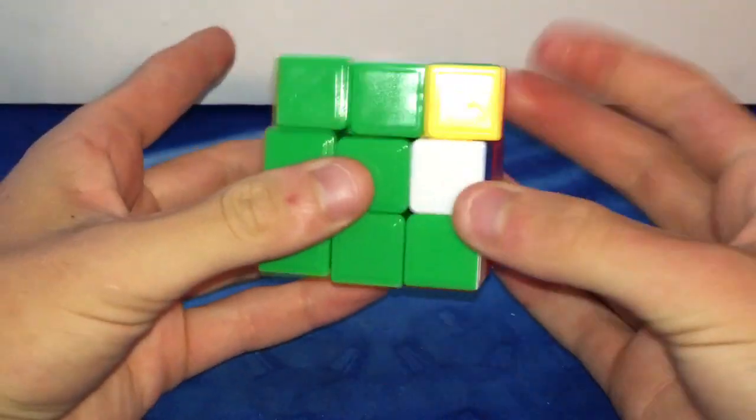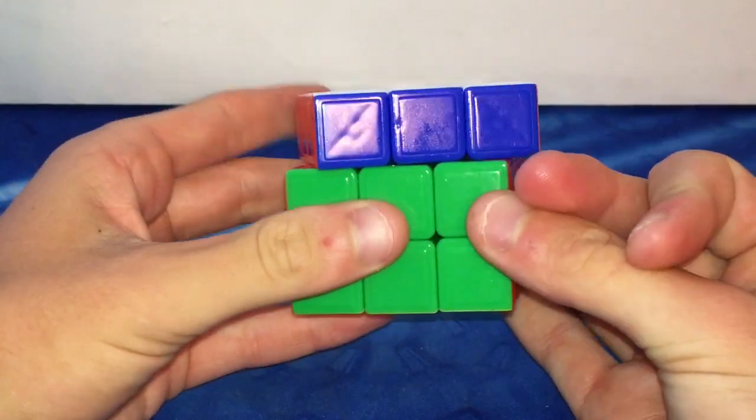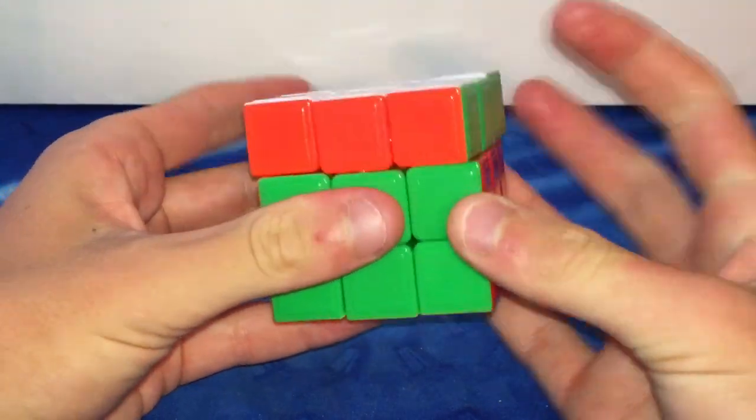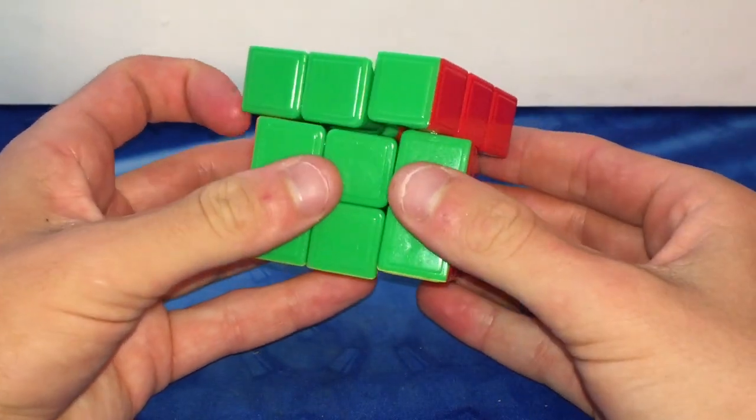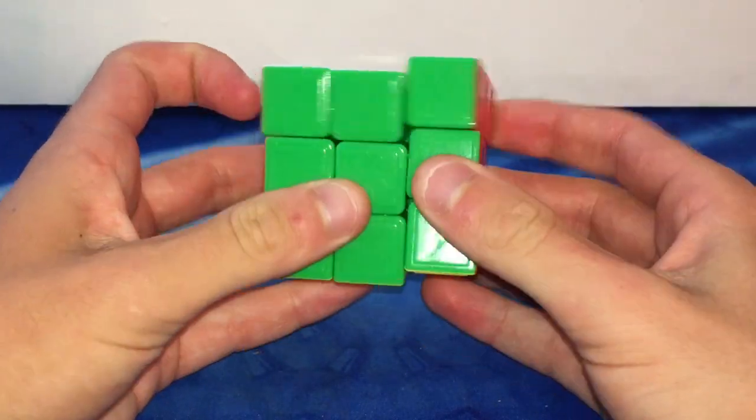So first turns on this puzzle, it actually turns really good. It's extremely fast now and it's actually really smooth. Let's see if the corner cutting is any better because it has a little bit less resistance. Over half a piece.